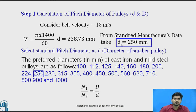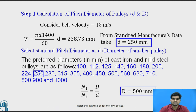Now we find the diameter of the larger pulley capital D. Using the relation N₁/N₂ = D/d — speed is inversely proportional to diameter — we calculate D. The result is D = 500 mm, which is also present in the standard table.